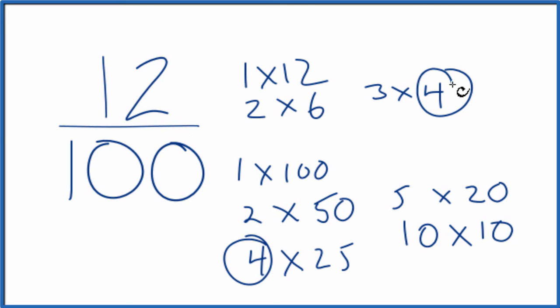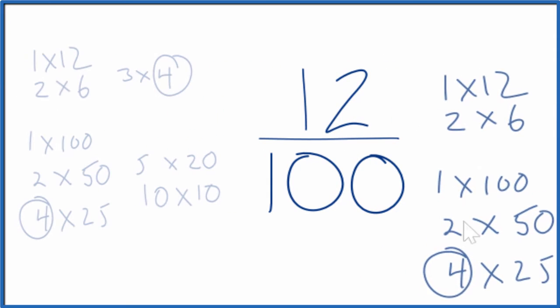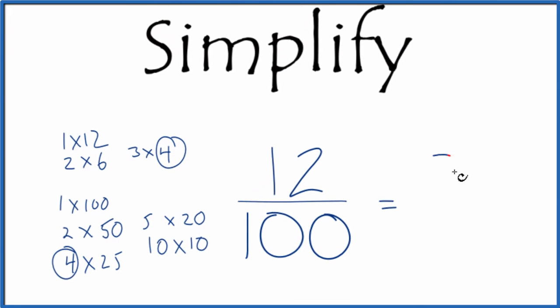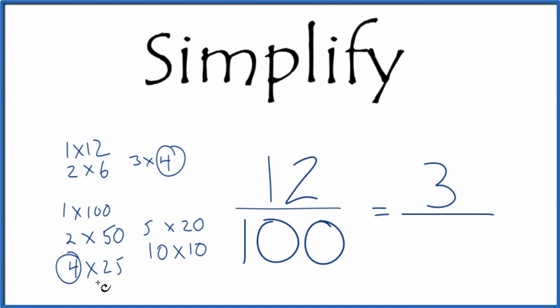We'll divide 12 by 4, 100 by 4, and we'll have reduced the fraction 12 over 100. Let's move these over here. So 12 divided by 4 gives us 3, and then 100 divided by 4 gives us 25, so we get 3 over 25.